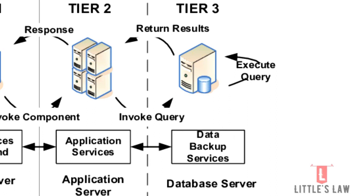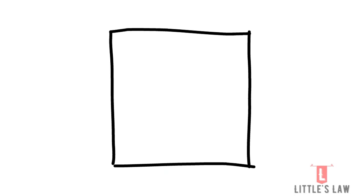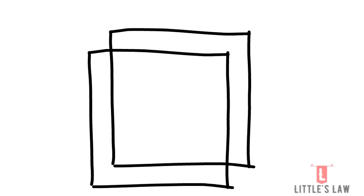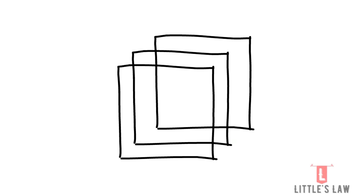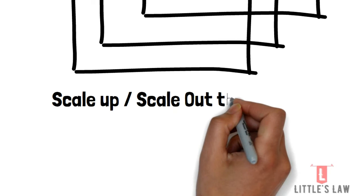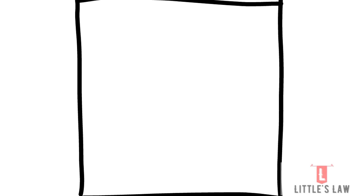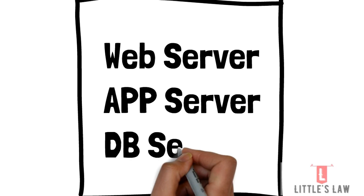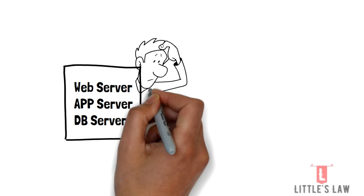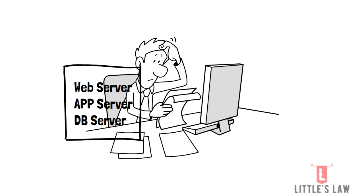The database server can run on the same physical machine as the web server, but it is usually the first component to be moved to a separate physical server when the site needs to scale. When your business grows and the web server, application server, and database server are all kept on separate machines, it becomes easy and comfortable to scale up or scale down by adding extra machines or increasing processing power. If everything is on a single machine without logical separation, scaling becomes much more difficult.